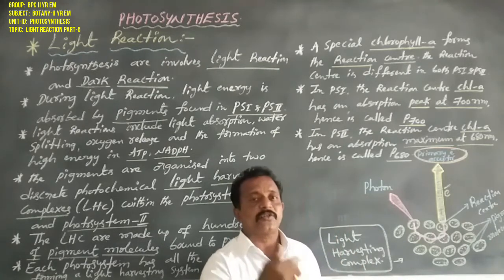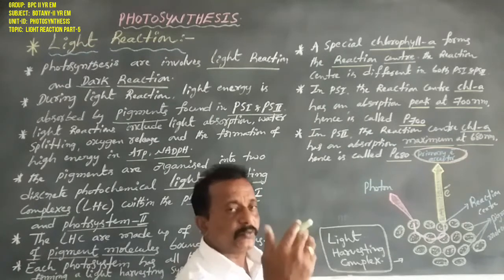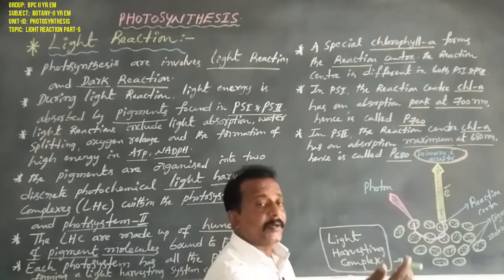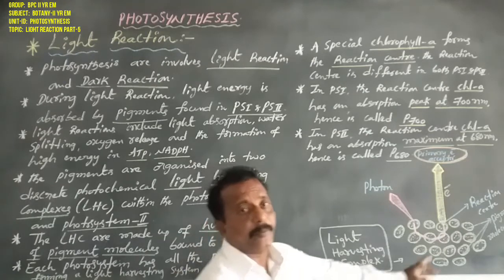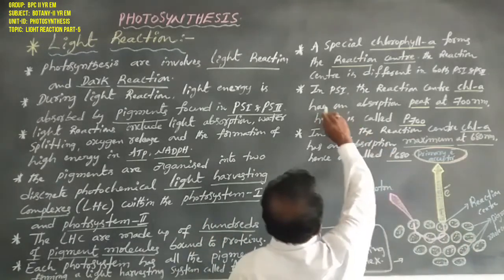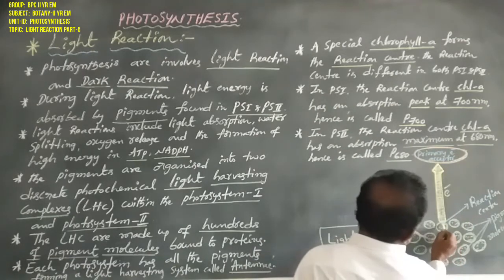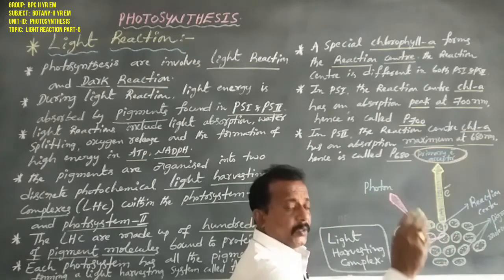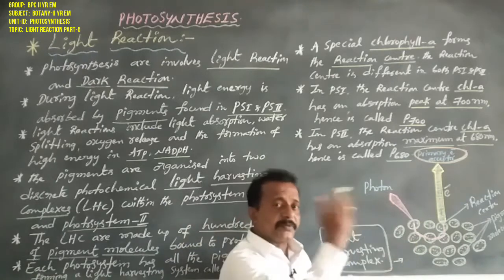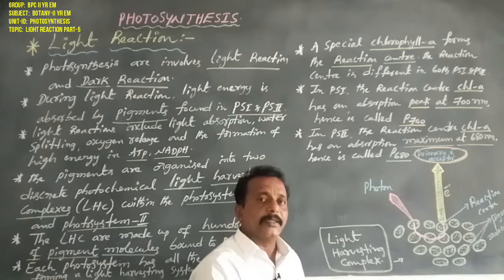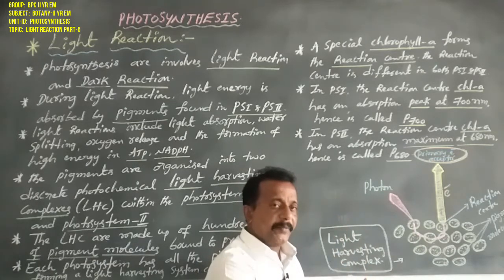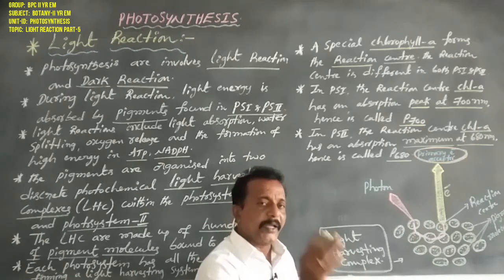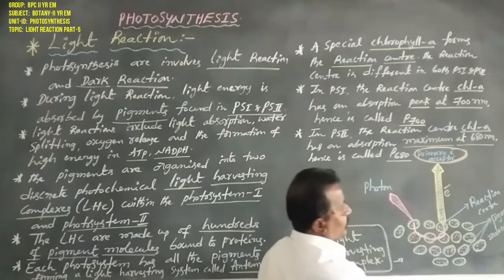The antenna contains photosystem 1 and photosystem 2. The light harvesting complex contains hundreds of pigment molecules bound to proteins, and a special chlorophyll A forms the reaction center. Chlorophyll A is special because it absorbs blue light and red light.